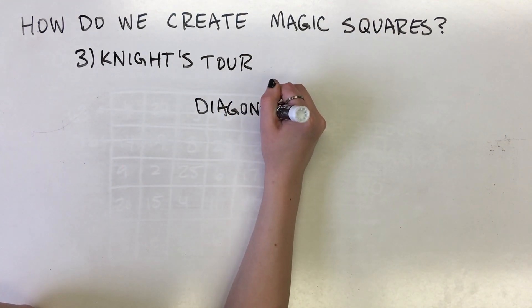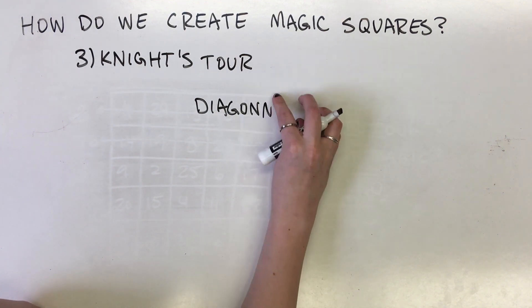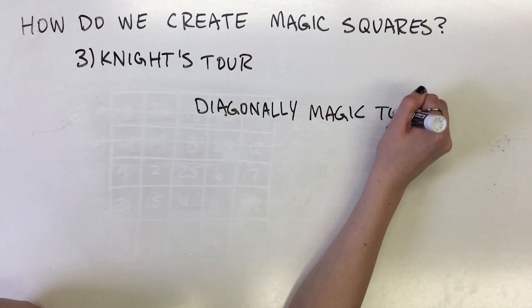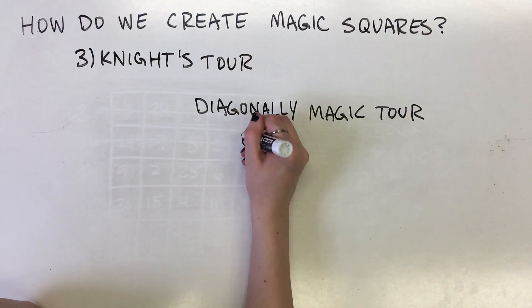It has also been proven that the diagonally magic tour is possible for boards with dimension 4k by 4k, when k is greater than 2. But what about when k equals 2, which is the chess board?